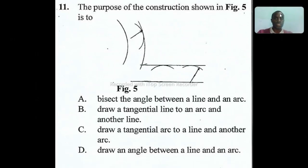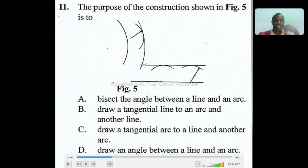Question eleven: the purpose of the construction shown in figure five is to draw a tangential arc to a line and another arc. You have an arc here to connect this line. This thing can only happen under the topic principle of tangency.